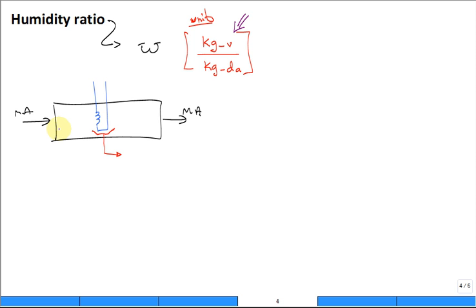So what stays constant? Is it the mass flow rate of the dry air and vapor that stays constant from the inlet to the outlet across the cooling coil? Is it the mass flow rate of the vapor that stays constant? No, some of that vapor is going to condense. So what stays constant is the mass flow rate of the dry air. That's why we like this ratio. Because the mass flow rate of the dry air is always constant.